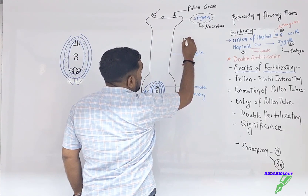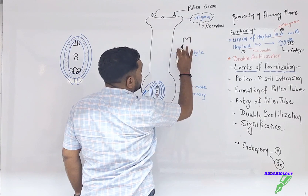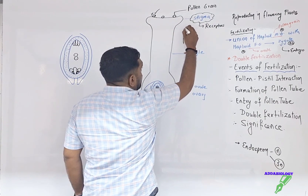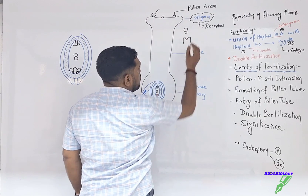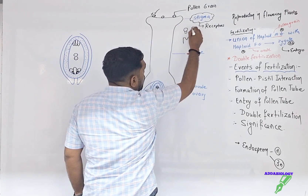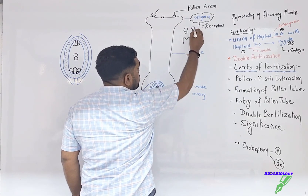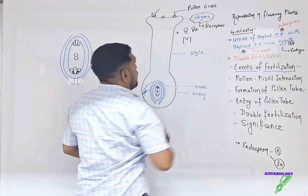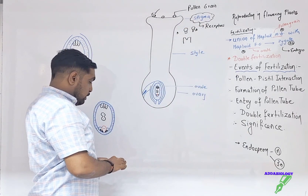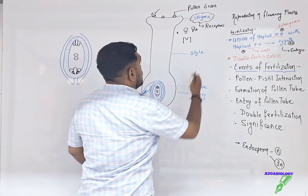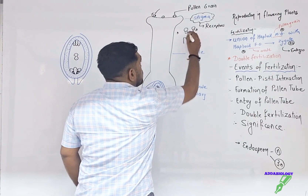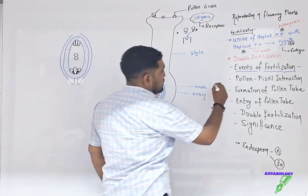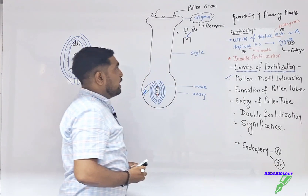Let me draw an analogy. Say receptor A belongs to the stigma and there is one pollen grain with receptor A and another with receptor B. Obviously, the pollen grain that matches the stigma is A. Once the pollen grain matches the receptors of the stigma, it is called pollen-pistil interaction.